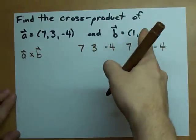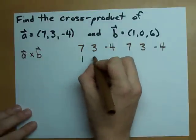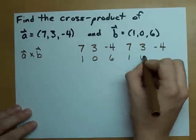Do the same for your second vector underneath, 1, 0, 6, 1, 0, 6.